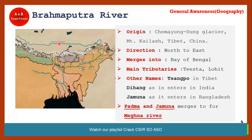In Tibet, the Brahmaputra is known as Yarlung Tsangpo. When it enters India, it is known as Dihang or Siyang. When it enters Bangladesh, it is known as Jamuna — not Yamuna. Also note: when the Ganga enters Bangladesh, it is known as Padma. When Padma and Jamuna merge, the combined river is known as Meghna. The main tributaries of Brahmaputra are Tista and Lohit.